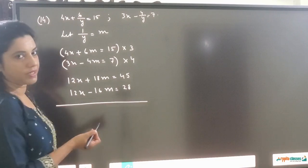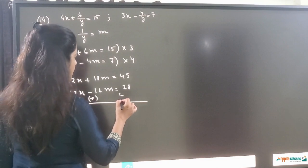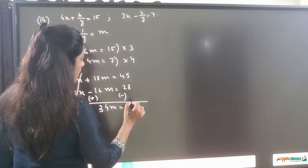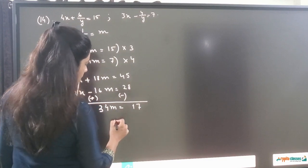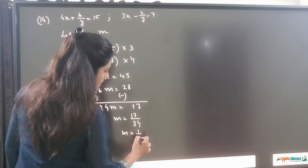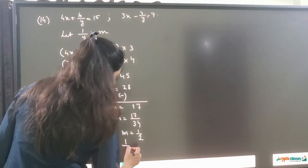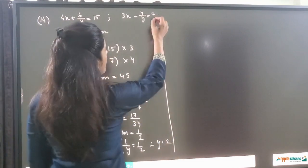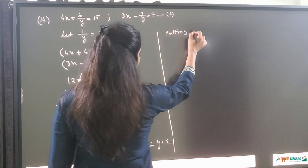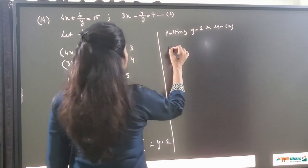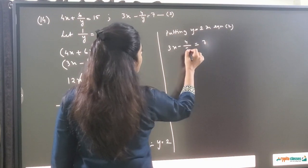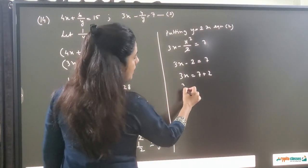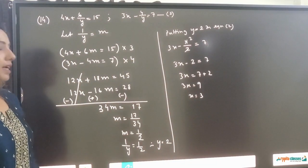Subtracting these two equations: the 12x terms cancel, and changing signs gives 18m plus 16m equals 34m, equal to 17. So m equals 17 upon 34, which is 1 half. Since m equals 1 upon y, we get 1 upon y equals 1 half, so y is equal to 2. Putting y equals 2 in equation 2: 3x minus 4 upon 2 equals 7, so 3x minus 2 equals 7, giving 3x equals 9, and x equals 3. So x is 3 and y is 2.